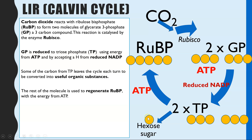Having lost one carbon from TP each cycle, that leaves five carbons remaining. The very last step of the cycle is to regenerate the RuBP so the cycle can continue to happen over and over. This stage also requires ATP — that final step of regenerating RuBP requires energy from ATP.